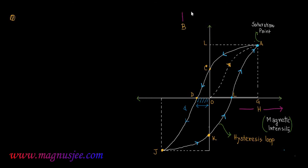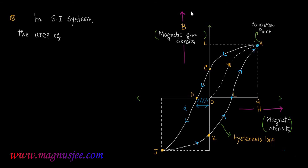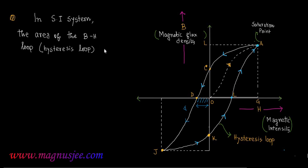Now, H is plotted along the horizontal axis and along the vertical axis the net magnetic flux density (B) of the ferromagnetic substance is plotted. In SI system, the area of the B-H loop, that is the hysteresis loop, is considered.